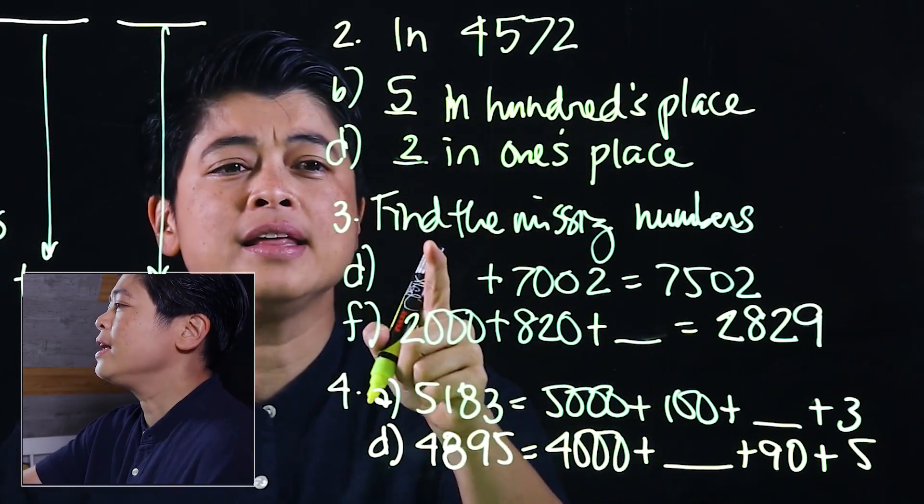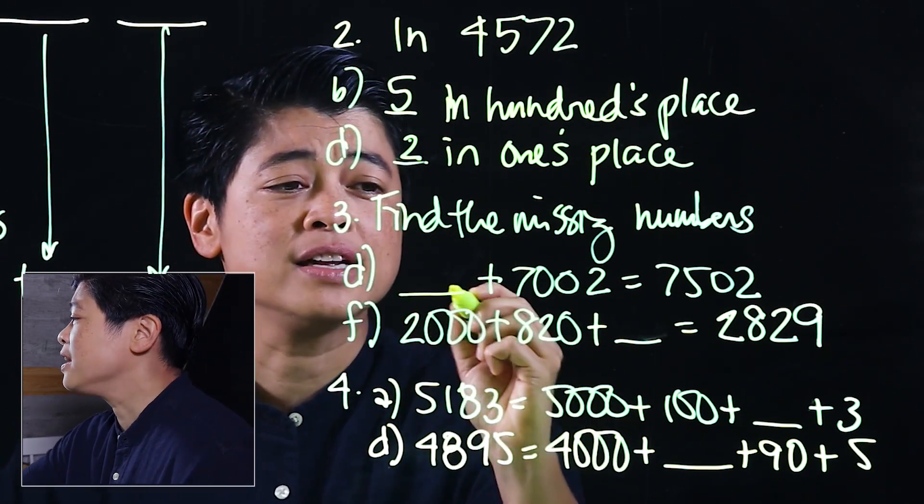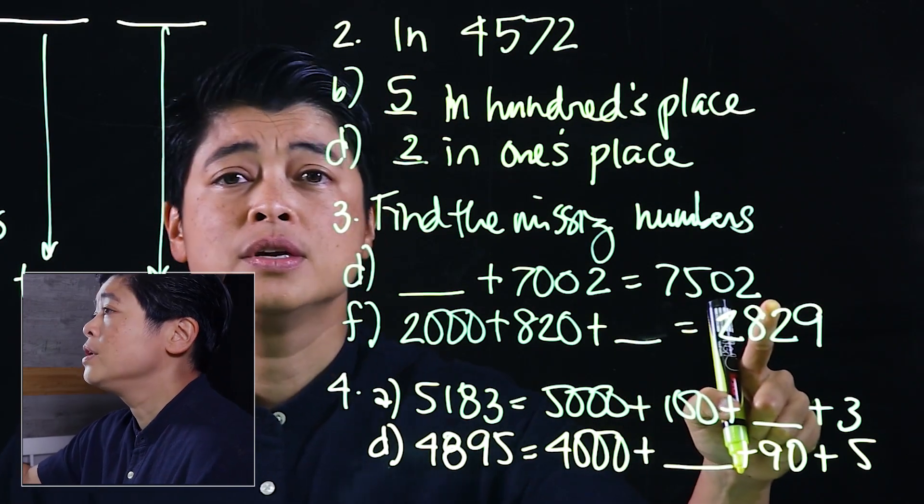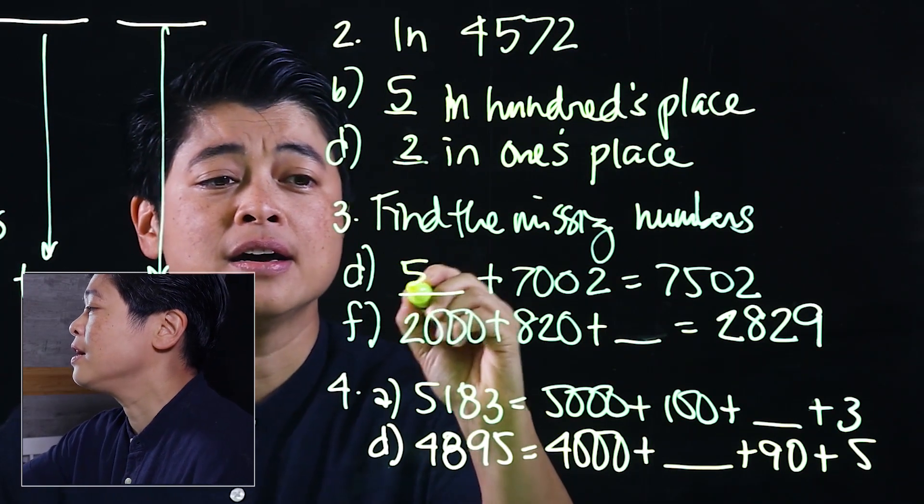In the next questions it says find the missing numbers. If I look at this, there's 7,502. So I have 7,002, so I'm missing the 500.